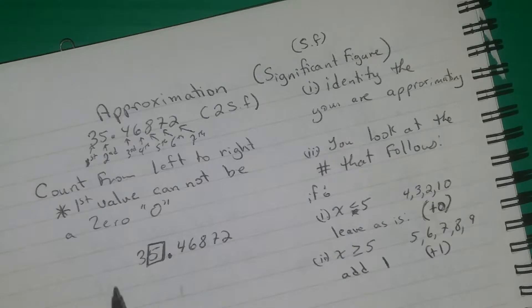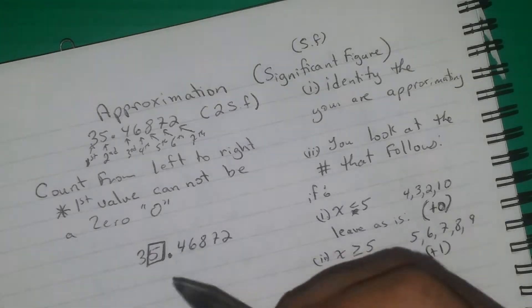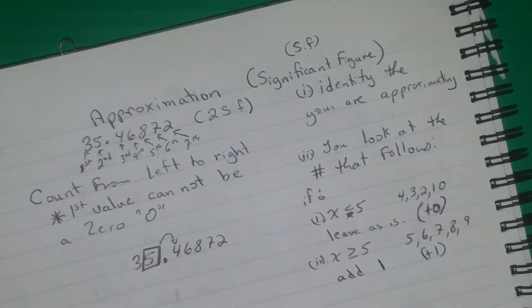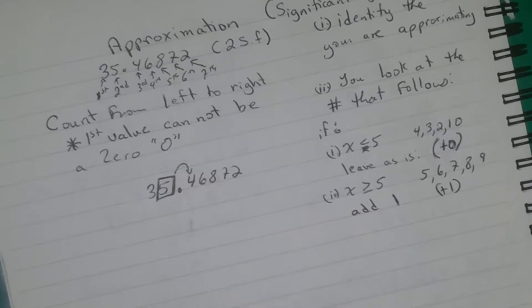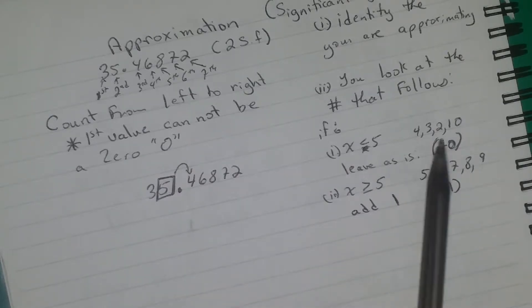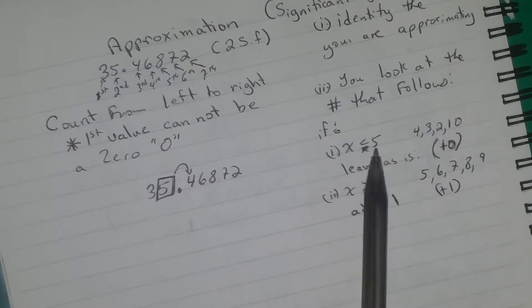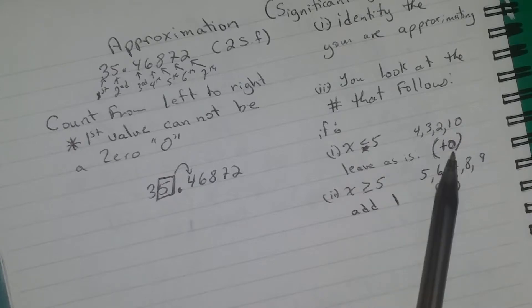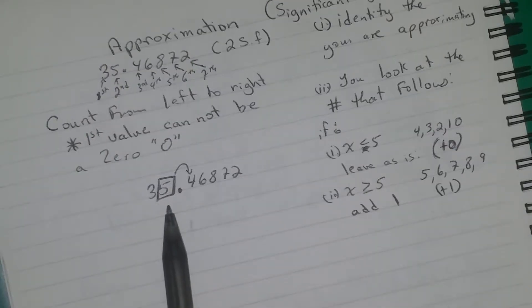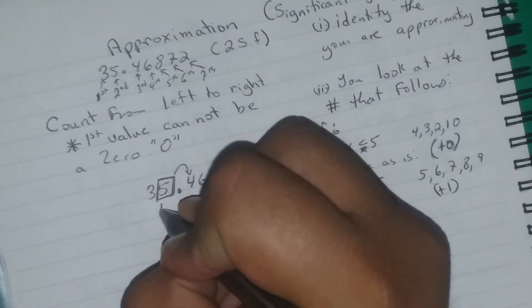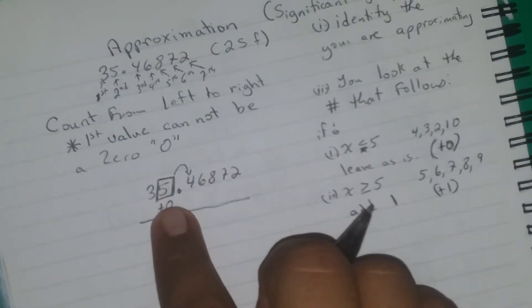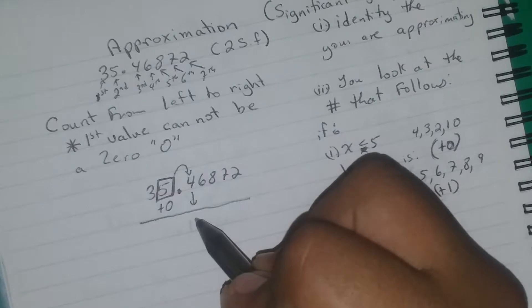Let's go back to the problem. We wanted to approximate 35.46872 to two significant figures. The second significant figure is the 5. We look at the number that follows — it is a 4. Since 4 is less than 5, we say plus 0, meaning the 5 will not change. All the numbers that follow after the one being approximated will change to 0.